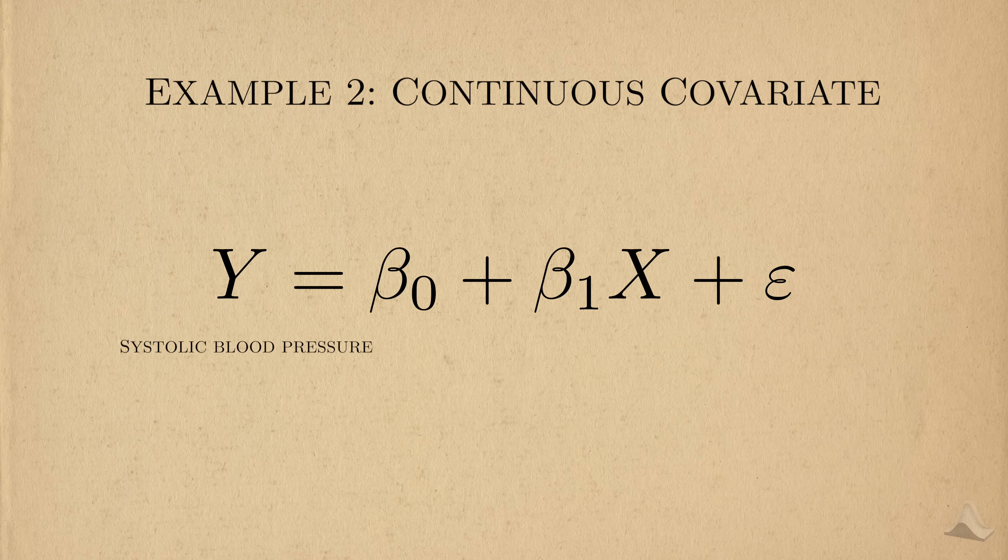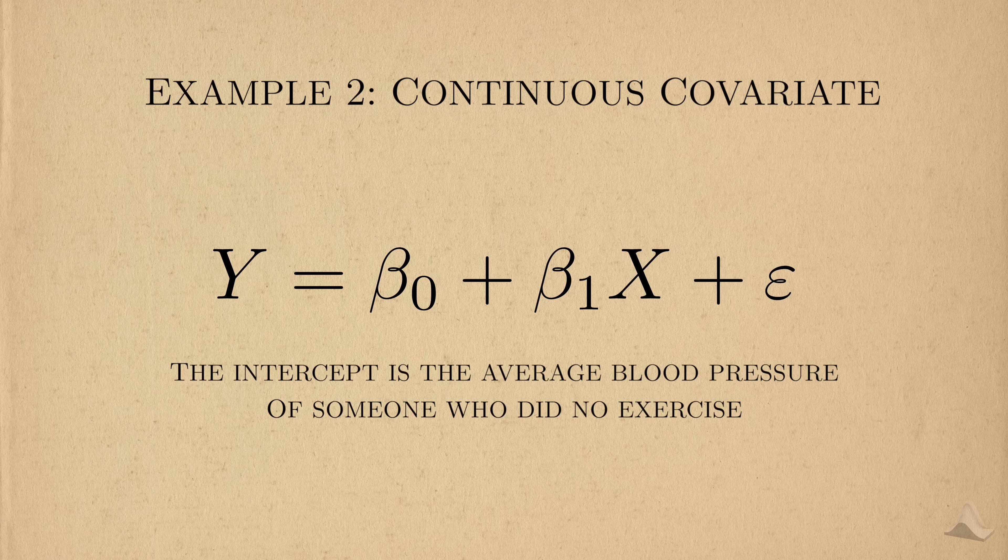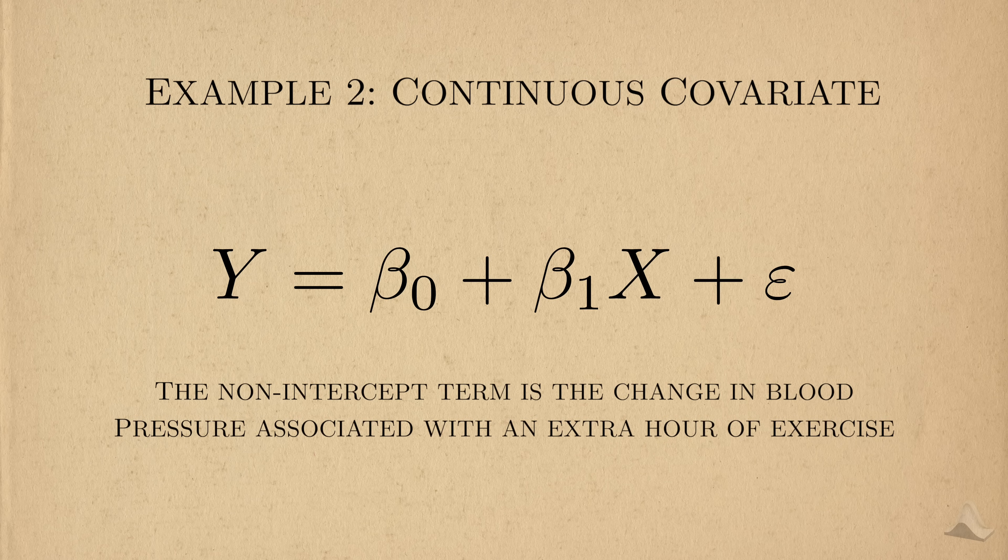For a second example, we'll keep blood pressure as the outcome, but we'll change x to be the amount of exercise someone gets measured in hours. That is, x is now continuous. In this case, beta 0 is the average blood pressure of someone who does no exercise, aka x equals 0. Beta 1 now represents the average change in blood pressure associated with an extra hour of exercise.